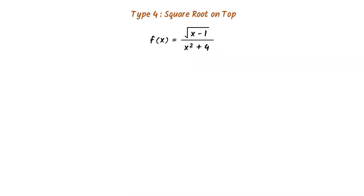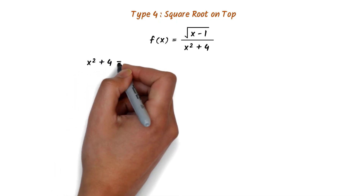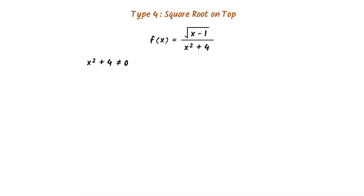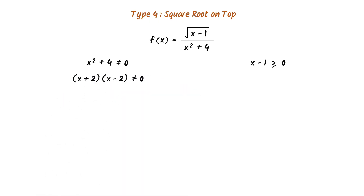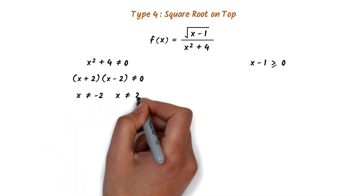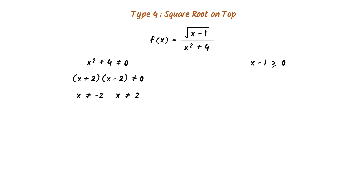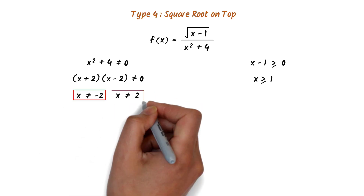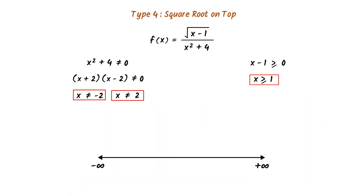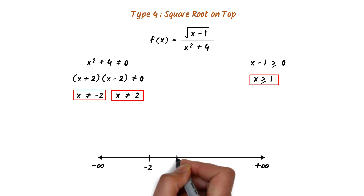The fourth type is square root on top. Consider this function. Since there is a fraction, the denominator x² + 4 should not equal 0, so (x + 2)(x - 2) ≠ 0, giving x ≠ -2 and x ≠ 2. Secondly, the radicand in the numerator, x - 1, should be greater than or equal to 0, giving x ≥ 1. We now have three critical values to place on a number line: -2, 1, and 2.